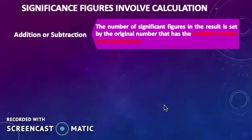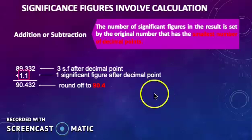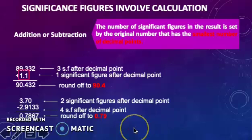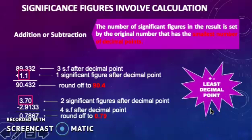In this example of addition procedure, the result has to be rounded off to 90.4 since 1.1 has the smallest decimal point. In the next example of subtraction procedure, the result has to be rounded off to 0.79 since 3.70 has the smallest decimal point. So, you have to consider the least decimal point in subtraction and addition procedure.